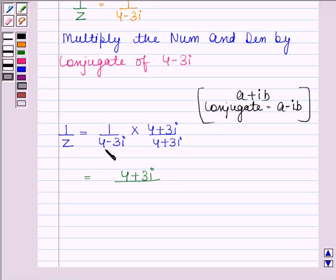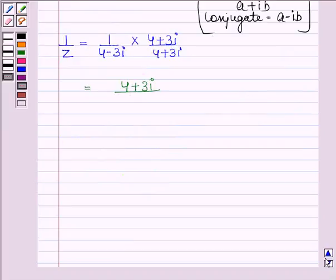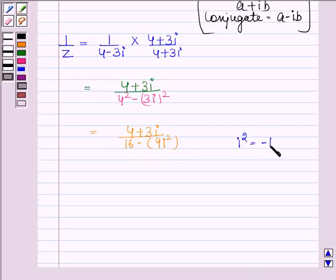In the denominator we have 4 minus 3 iota times 4 plus 3 iota. We can use the identity A squared minus B squared. This equals 4 squared minus the square of 3 iota, which is 4 plus 3 iota upon 16 minus 9 iota squared. Since iota squared equals minus 1, this equals 4 plus 3 iota upon 25.